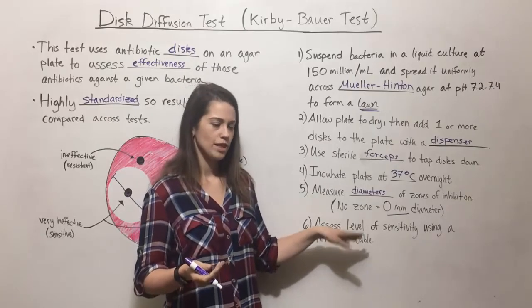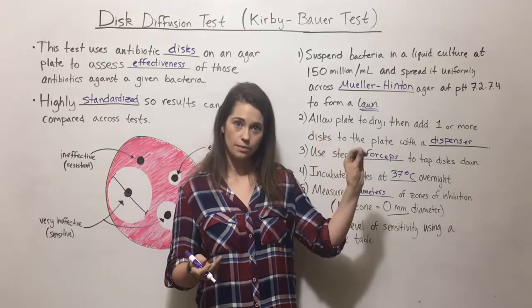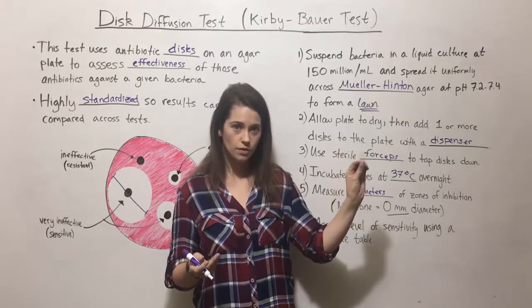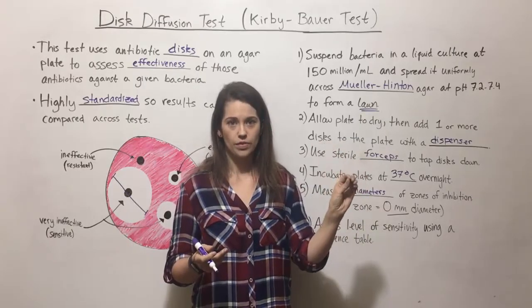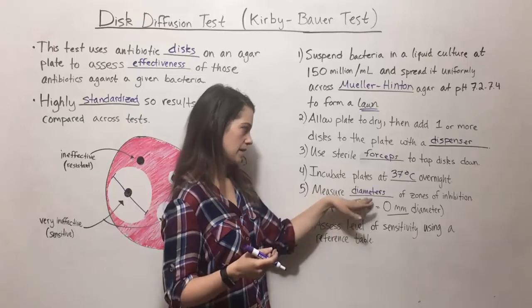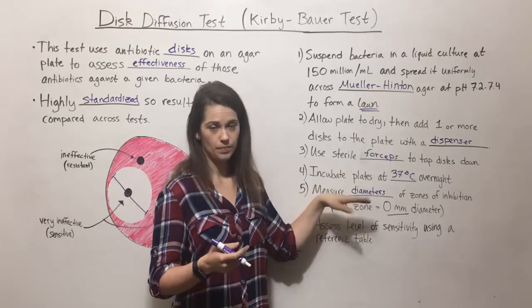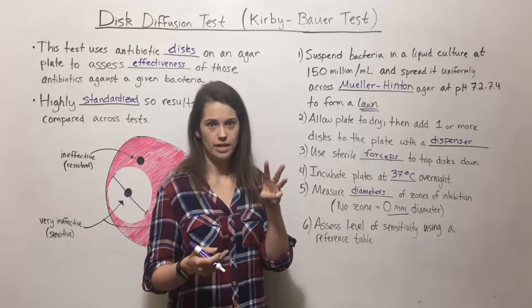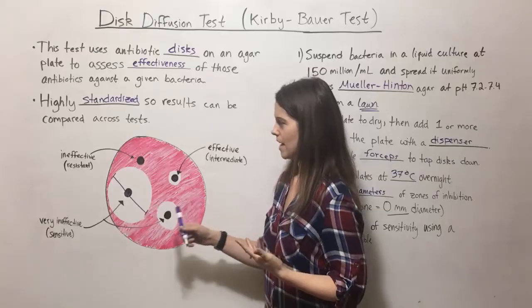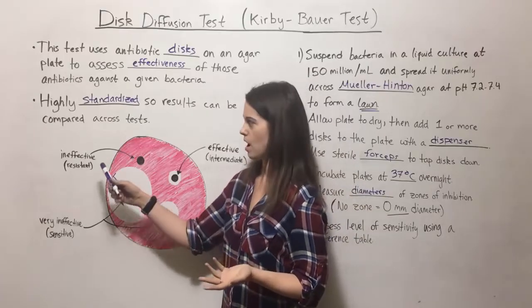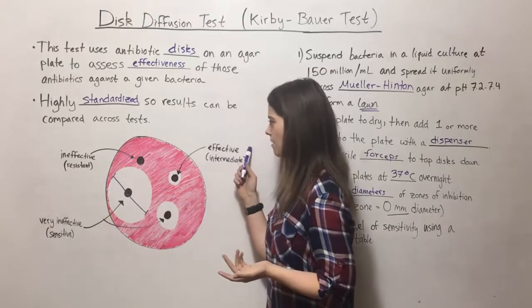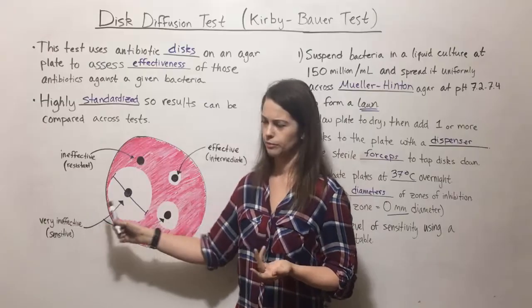With the reference table, you look at the antibiotic being used, the concentration used, and what the zone of inhibition's diameter was. All three of those things together allow you to assess whether the antibiotic is ineffective, effective, or very effective against the given bacterium.